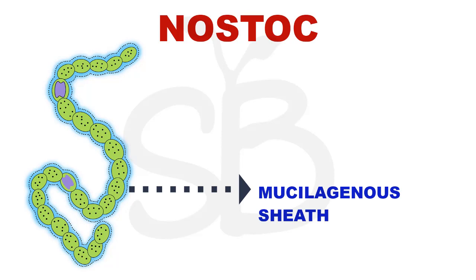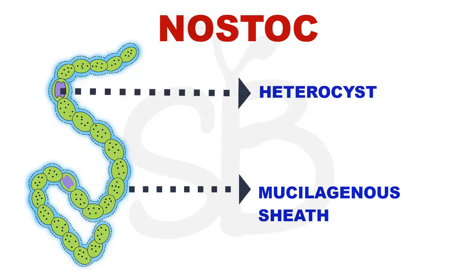Examples of cyanobacteria are Nostoc and Anabaena. They can fix atmospheric nitrogen. The structure responsible for this is called the heterocyst.